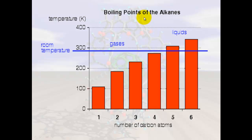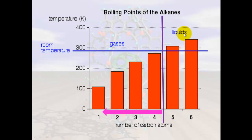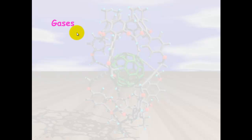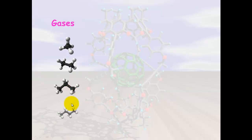If we have a look at the graph here, which is the boiling points of the alkanes, we'll see that there's a division between the gases and the liquids. From four carbons backwards, they are all gases. So any alkane that has four or less carbons will be a gas. At room temperature, the gases will be methane, ethane, propane, and butane.